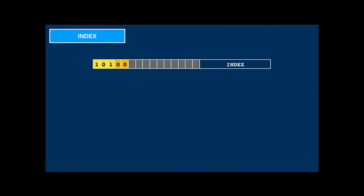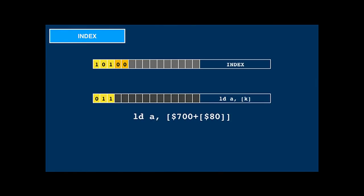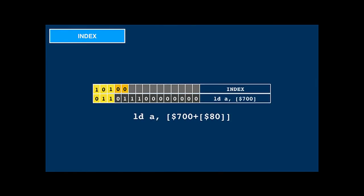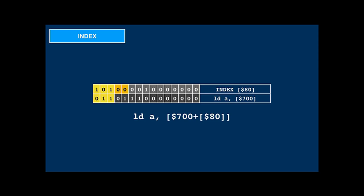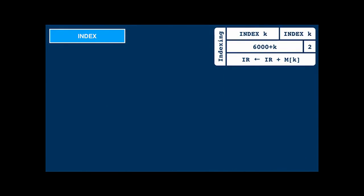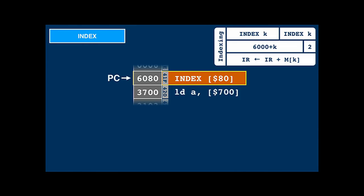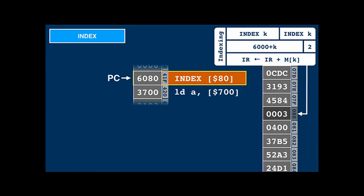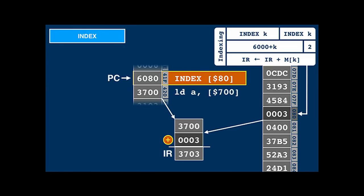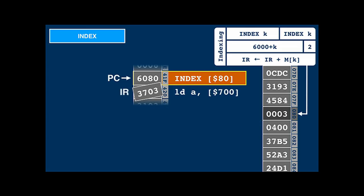Indexed addressing is achieved by using the index prefix. An index instruction consists of two instruction words: index and the base instruction. The addressing code in the base instruction is the base address, and the index instruction encodes the address of the index. Index is an actual instruction — the CPU reads from the given address, adds its value to the instruction code of the following instruction stored in the internal IR register, then uses the resulting instruction code for the next instruction. For example, index reads value 3 from address 0, adds it to instruction code 3700, producing 3703, which is a load from 703, the effective address.